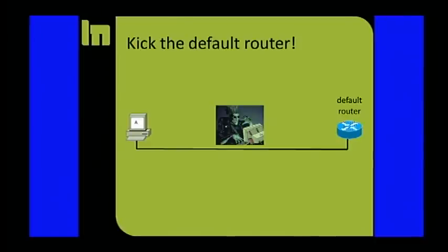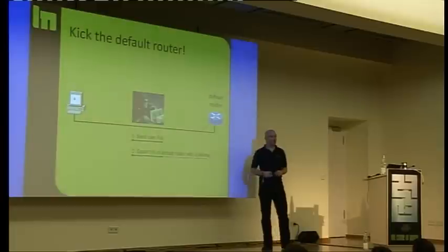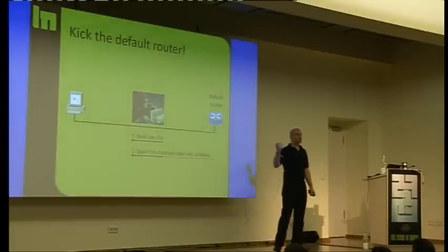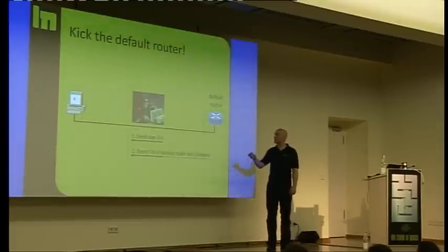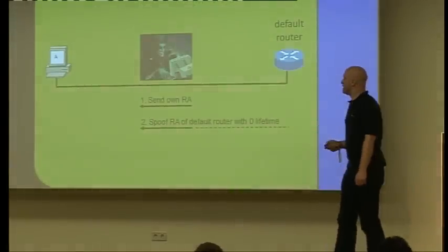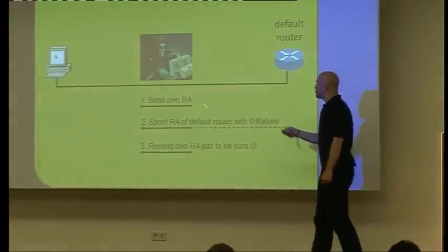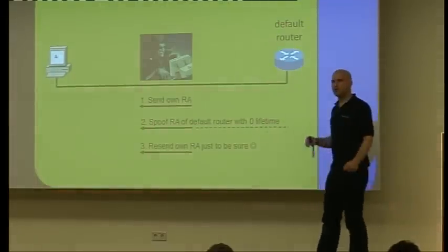Now comes the new stuff. There is an easy way how you can kick the default router and by that remove any router availability on the local network. You spoof the router advertisement of the default router with a zero lifetime. The systems will receive the thing, zero lifetime, okay, the router is announcing it's not there anymore. You spoof that packet, boom, route gone.